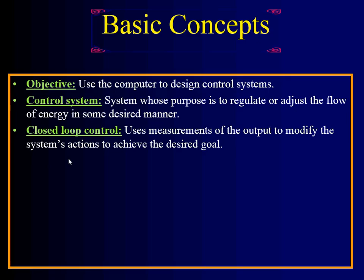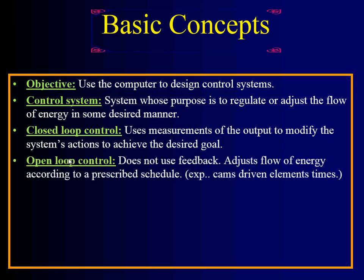Closed-loop control uses measurements so that you can modify the output depending on what you measure. The best example is the cruise control of your car — you set it to 65 mph, and if you're not doing 65, the car will automatically accelerate a little or slow down. It is a closed-loop control system because it has a sensor that tells the controller how fast you're going. The open-loop control system does not use feedback; it adjusts the flow of energy on a schedule — for example, Christmas lights that turn on at 7 in the evening.